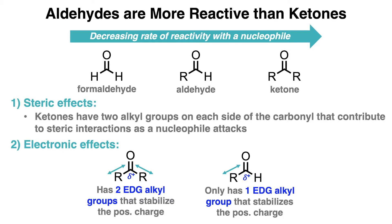The second reason aldehydes are more reactive than ketones towards nucleophilic attack is due to electronic effects. Recall from EAS reactions that alkyl groups are electron-donating groups. A ketone has two electron-donating alkyl groups that can stabilize the partially positive charge on the carbon of the carbonyl, while aldehydes only have one electron-donating group. The partially positive charge of an aldehyde is less stabilized than a ketone, which means that aldehydes are more electrophilic and more reactive than ketones.